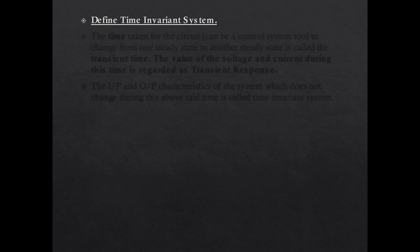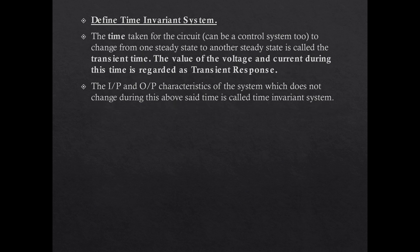Define time invariant system. The time taken for a circuit or system to change from one steady state to another is the transient time, and the voltage and current values during that time represent the transient response. The input and output characteristics of a system which do not change during that transient time are called a time invariant system.